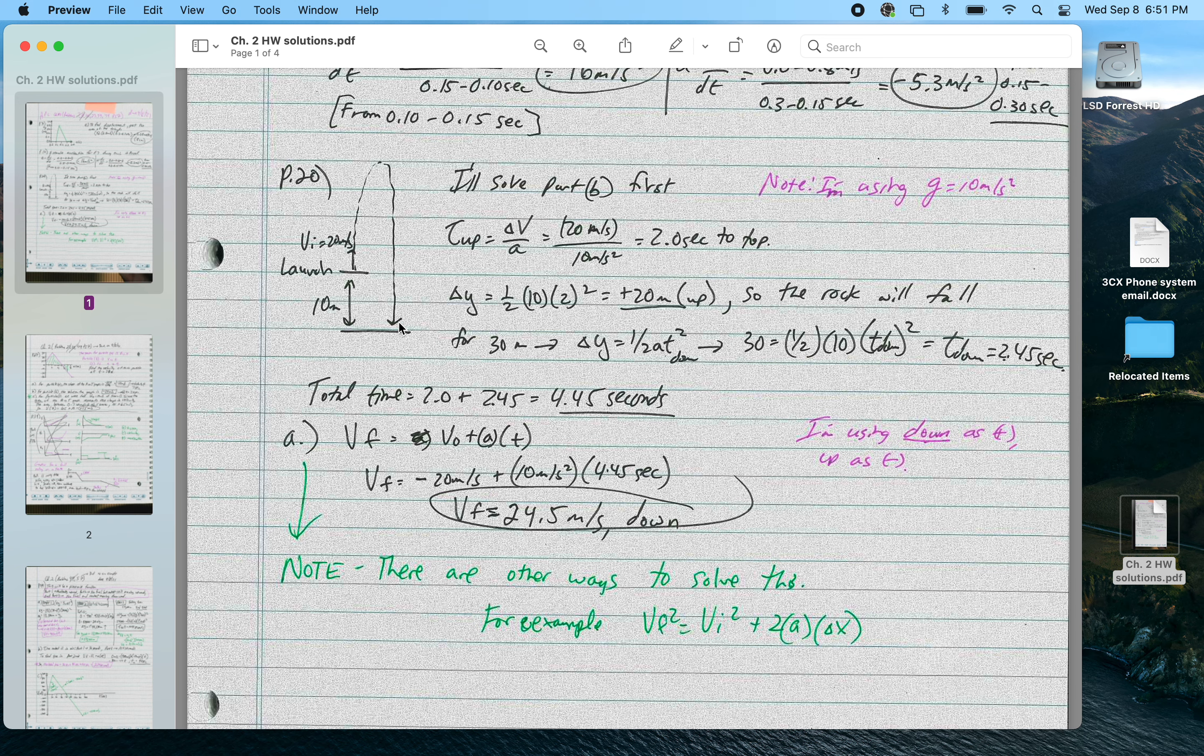Coming back down to the bottom, now we're going to be falling 30 meters. So I plug that into change in y is equal to one half at squared. That's 2.45 seconds downward, so the total time for this is 4.45 seconds.